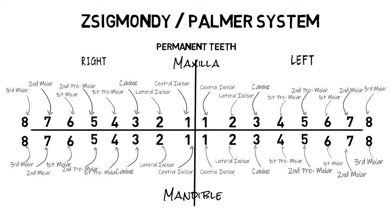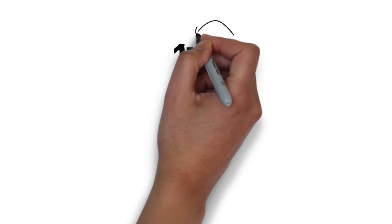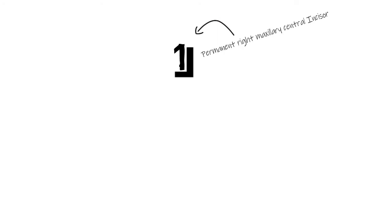The way you differentiate between each individual tooth in the Palmer system is by drawing a sign — something similar to a bracket notation — where each sign represents a particular quadrant. So if I were to write the permanent right maxillary central incisor, I would write it something like this, or if I were to write left mandibular first premolar, I would write it something like this.